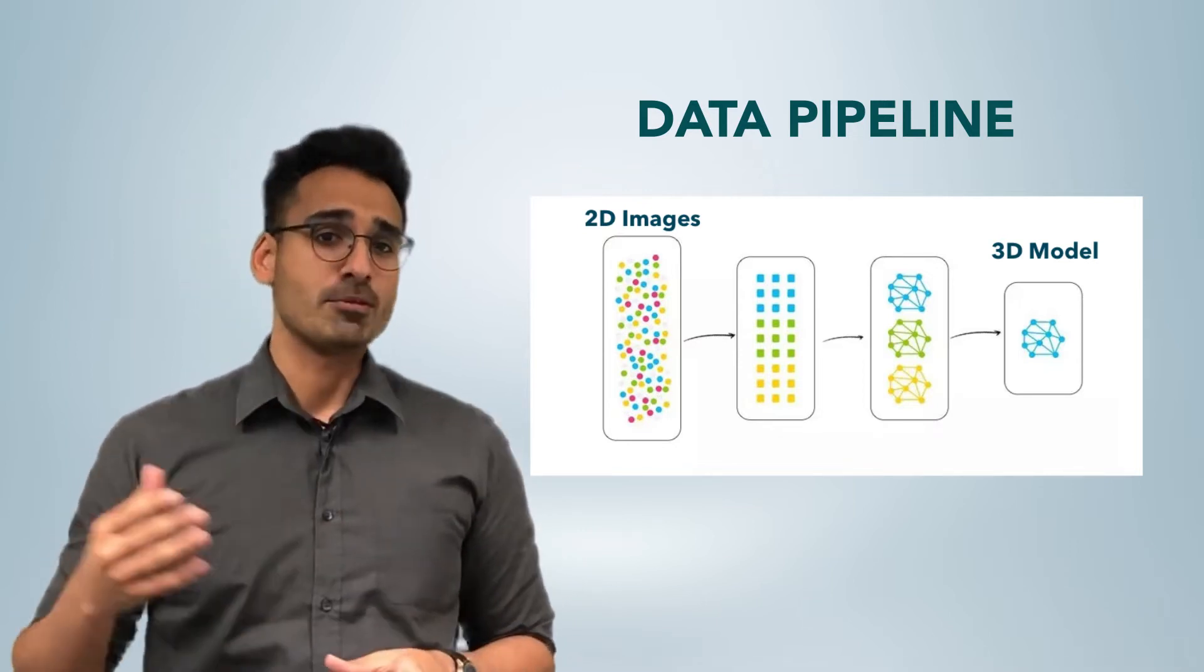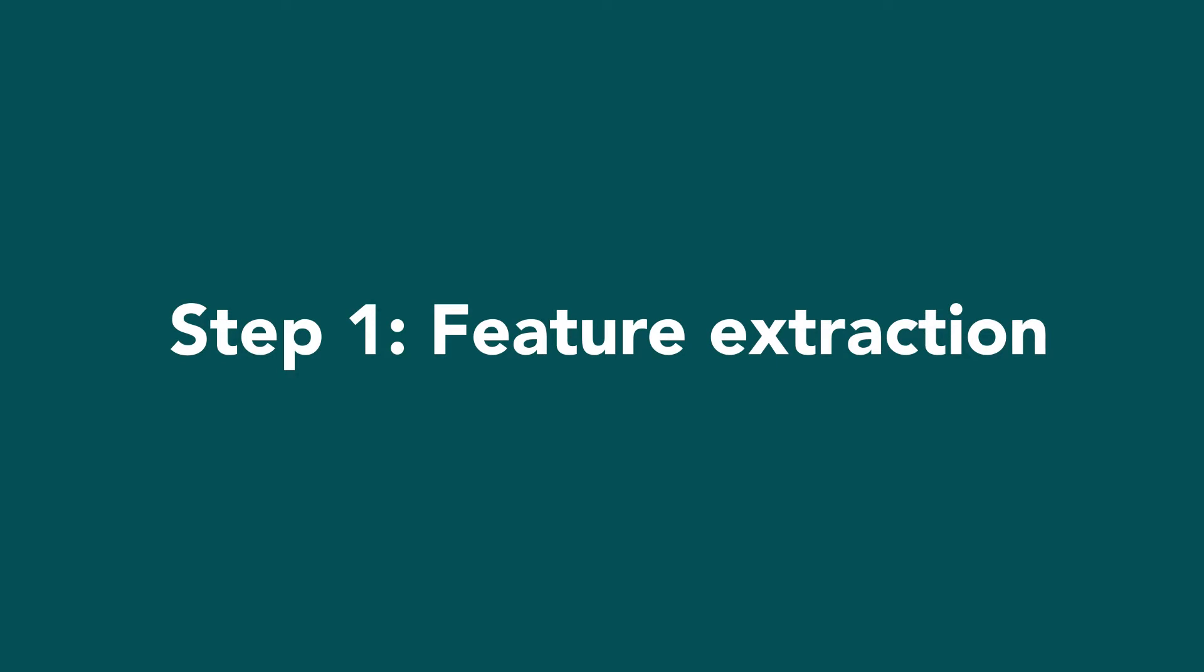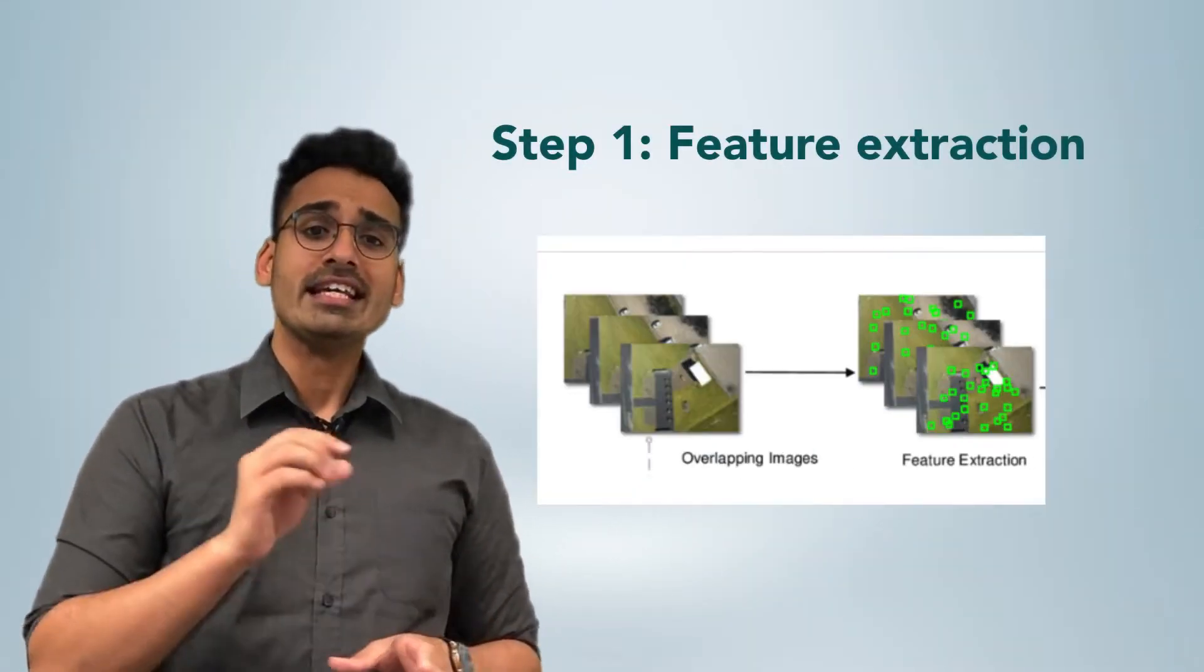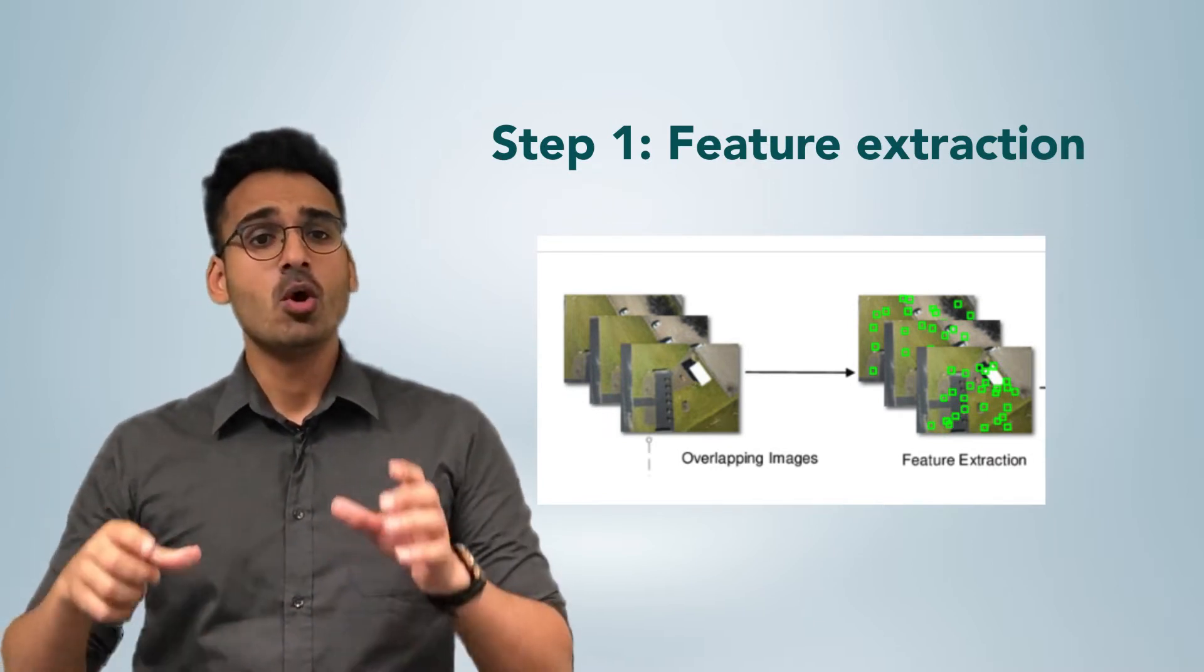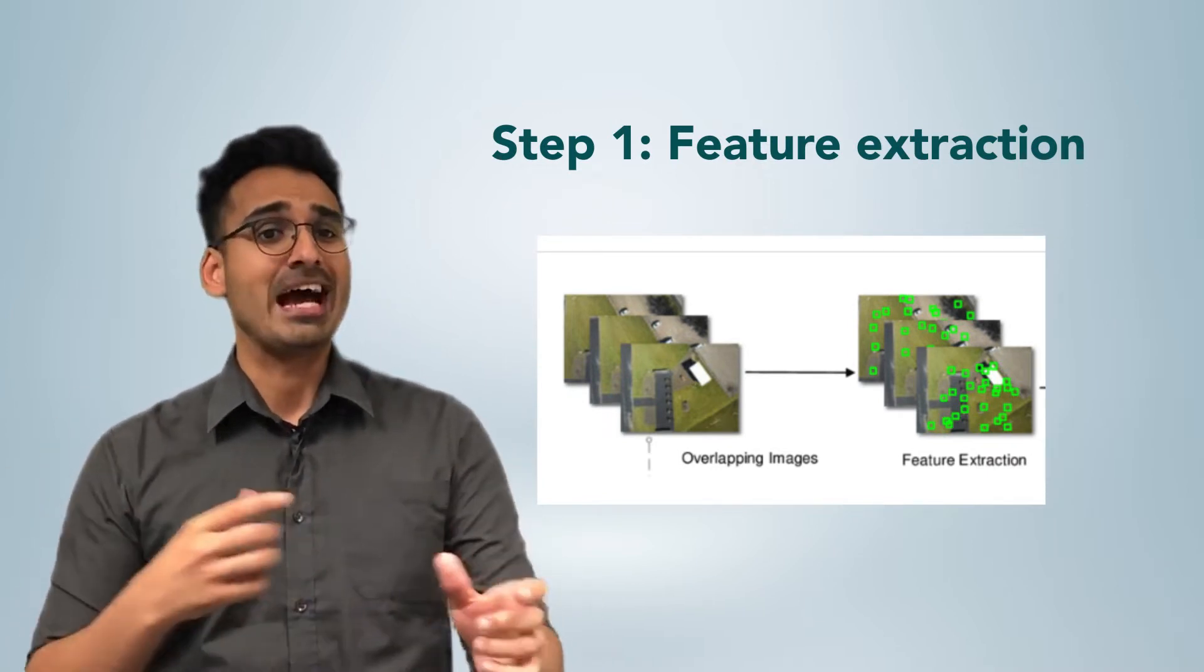This involves a number of different back-to-back steps. Let's have a look at the common ones. Step 1: Feature extraction. The goal of this step is for the software to find key features, that is a group of pixels, in the input images.